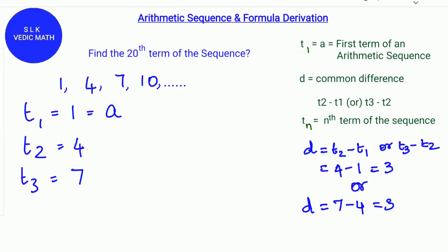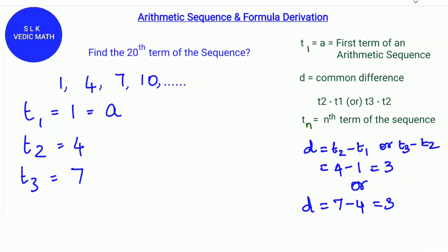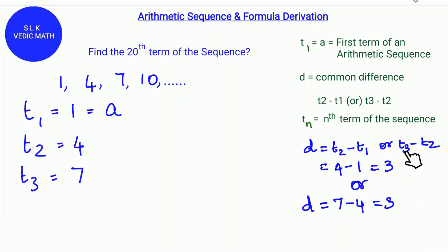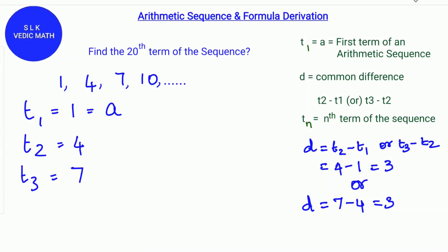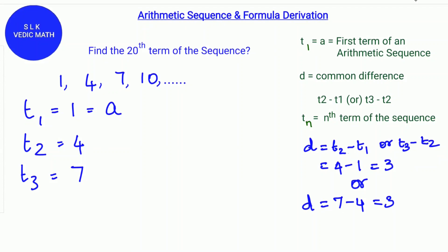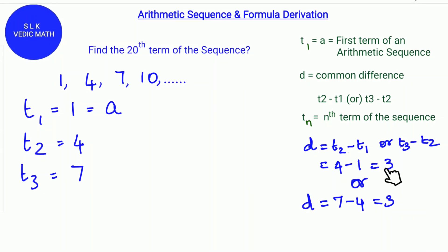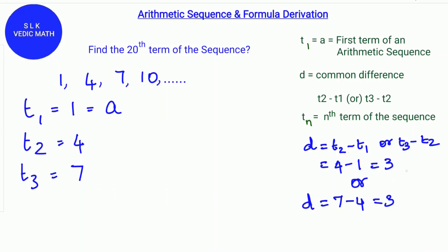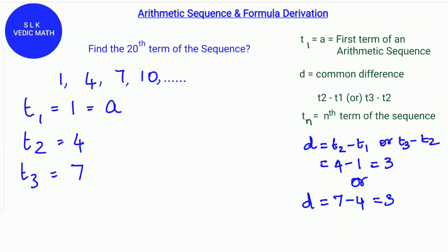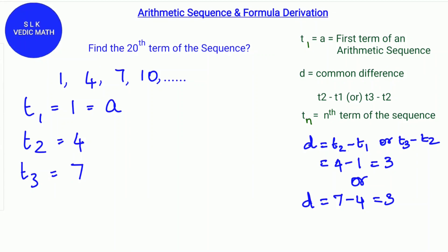Next, to find the common difference which is d, we can either do T2 minus T1 or T3 minus T2. For T2 minus T1, we do 4 minus 1 which is 3, or for T3 minus T2, we do 7 minus 4 which is also 3. So the common difference is 3.